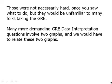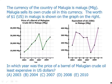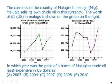The more demanding data interpretation questions involve two graphs that you have to relate to each other. Here's an example. Pause the video and then we'll talk about this. This is a relatively challenging problem involving currency exchanges as well as fluctuating prices. The currency of the country of Malugia is Malugs. Malugia sells its own crude oil in this currency. The worth of $1 Malug is shown in the graph on the right. The graph on the left shows the fluctuating price of crude oil in Malugs. The question is: in which year was the price of a barrel of Malugian crude oil least expensive in U.S. dollars?